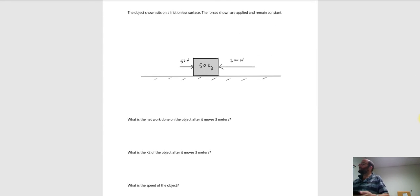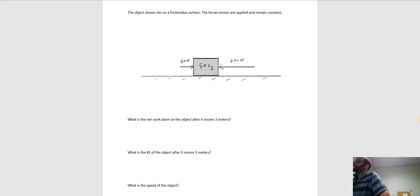Here's another example: an object sitting on a frictionless surface with two constant forces — a 200-newton force to the left and a 50-newton force to the right. What is the net work done after it moves three meters? We can find the work terms independently and add them. The work done by the 200-newton force is 200 × 3 = 600 joules (positive, force and motion both left).